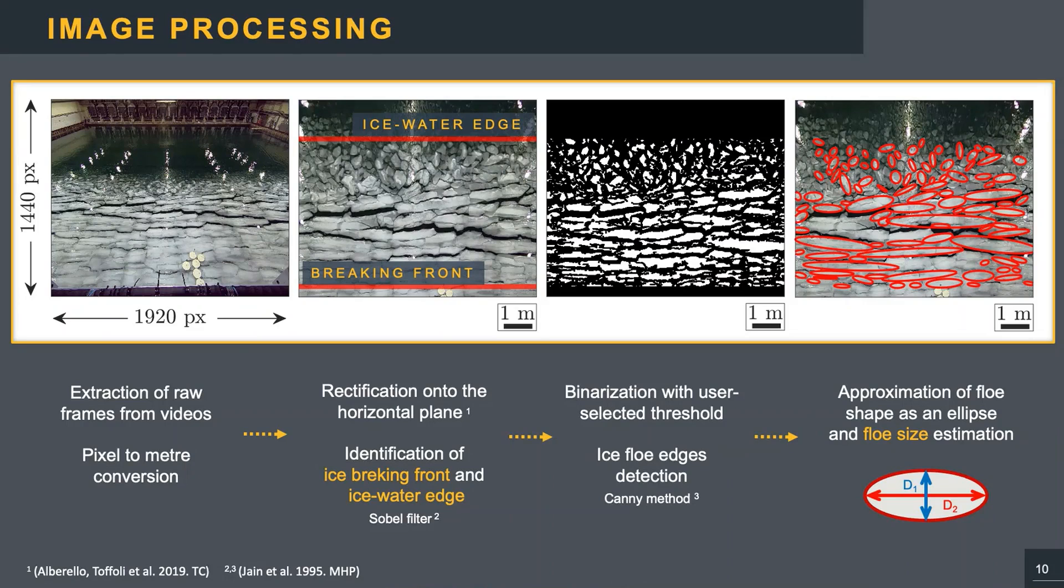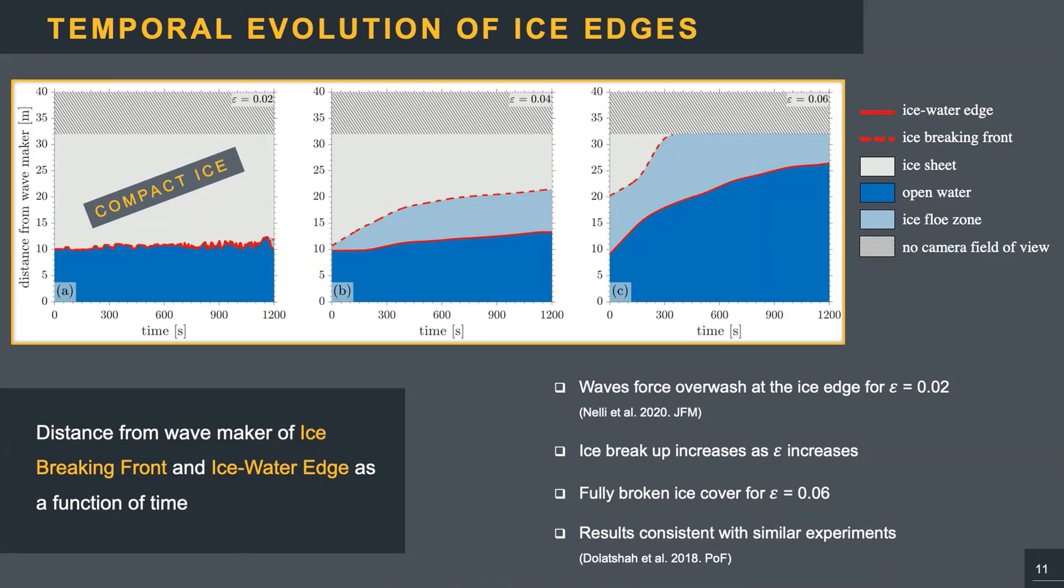Finally, the floe shape was approximated as an ellipse to easily retrieve the longitudinal and the transverse dimensions, D1 and D2. Okay, these first graphs represent the temporal evolution of the ice breaking front and the ice water edge for each steepness. With the blue area denoting the open water, the gray area the ice sheet, and the light blue area the region of broken floes.